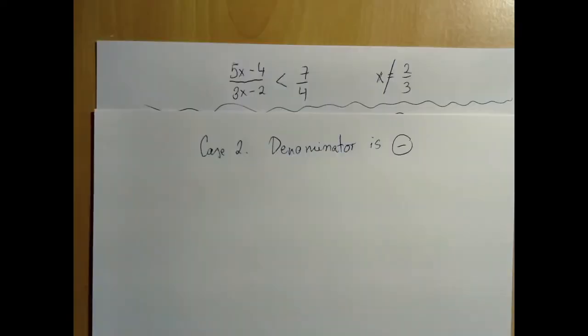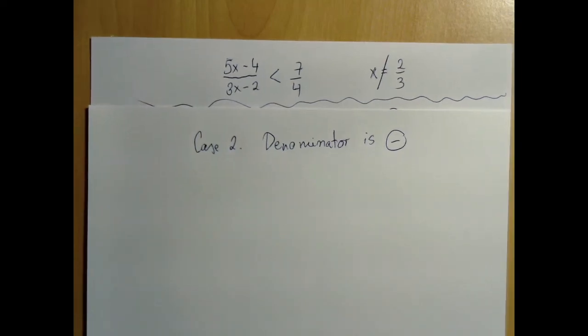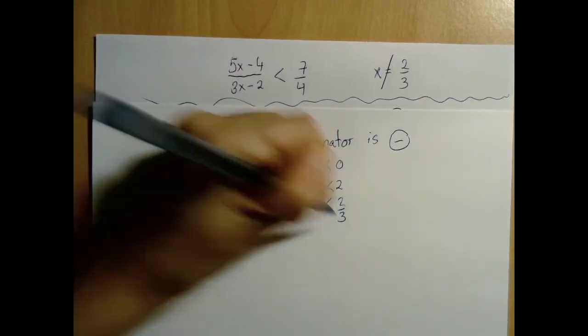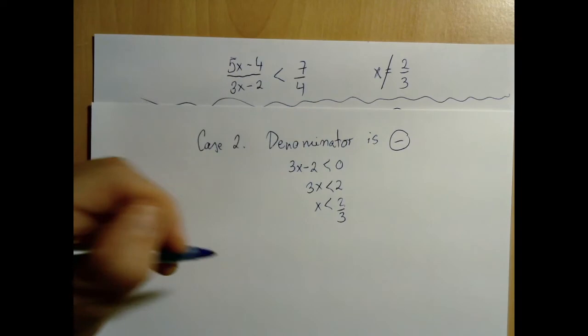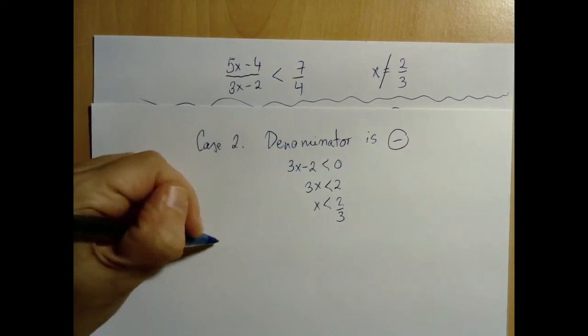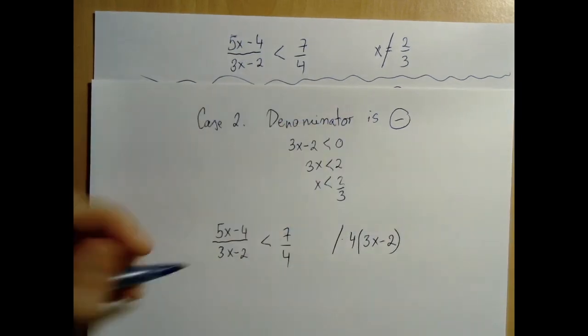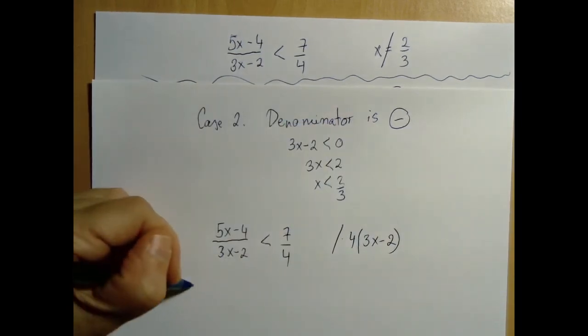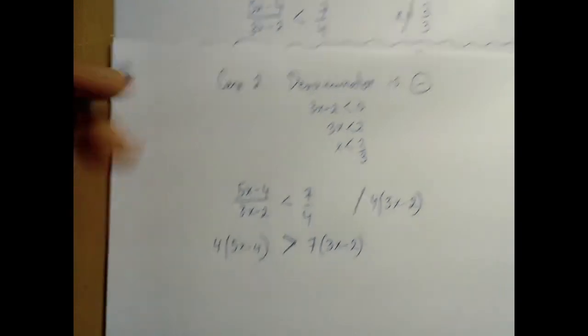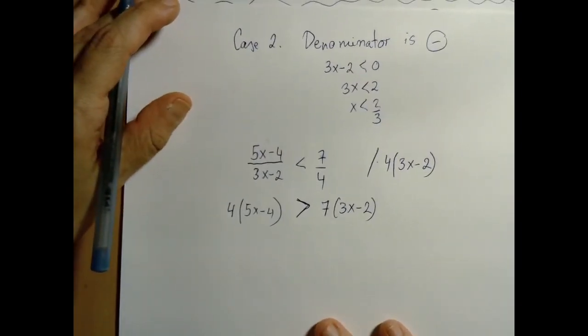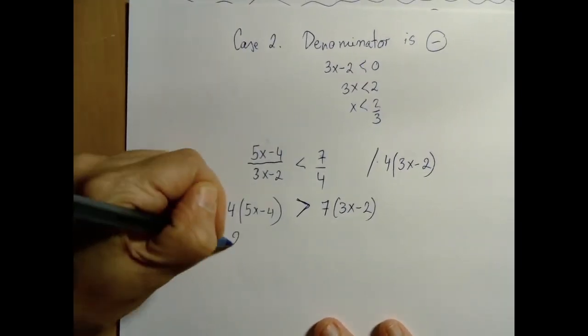Well, that's not the only case, right? We could have a negative denominator. So the denominator is negative when x is less than 2 over 3. So we are going to look for solutions only among the numbers that are less than 2 thirds. In that case, when we are multiplying both sides by 4 times 3x minus 2, we are multiplying by a negative quantity, which means that the inequality sign must be reversed.